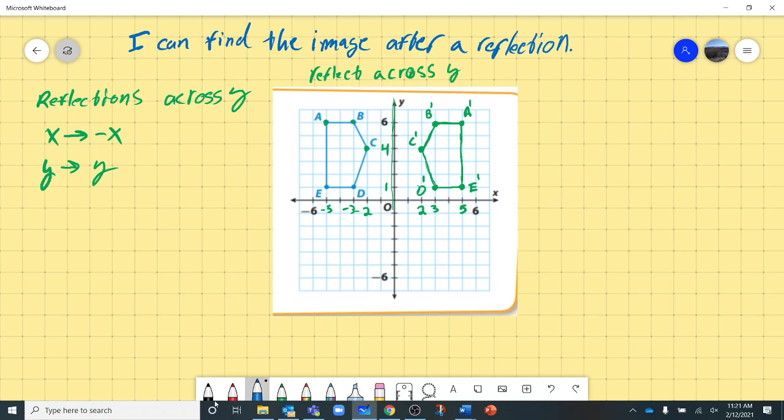Extending this a little bit, what do you think would happen if we reflect it across the X axis? Well, just in the same sense, reflect across the X, our X value is going to stay the same. Our Y value is going to become the negative of it.